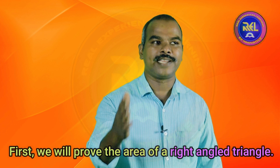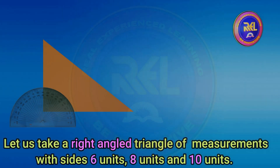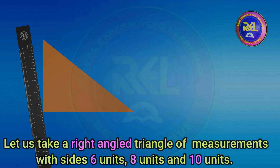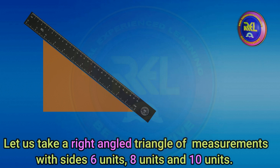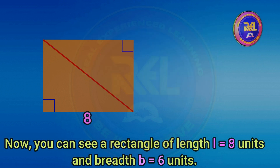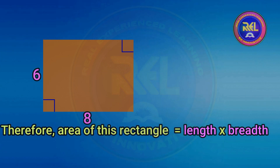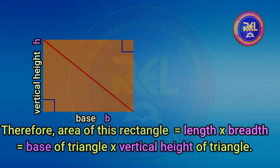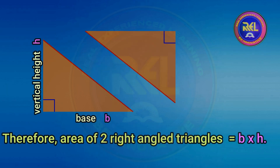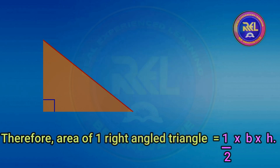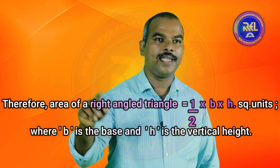First, we will prove the area of a right-angled triangle. Let us take a right-angled triangle with sides 6 units, 8 units, and 10 units. You can see a rectangle of length L equal to 8 units and breadth equal to 6 units. Therefore, area of this rectangle is equal to length into breadth, which equals base of triangle into vertical height of triangle. Therefore, area of two right-angled triangles is equal to B into H. Therefore, area of one right-angled triangle is equal to half into B into H.